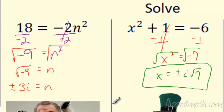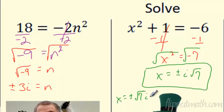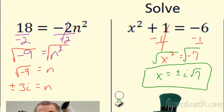Some people will try to say it's plus or minus √7·i — we don't put the i at the end because it's confusing. It's hard to tell if it's under the square root or not. So we put that i in front. Please always put that i in front so we know exactly what we're talking about.